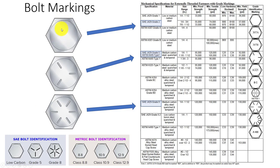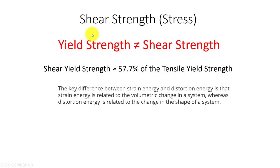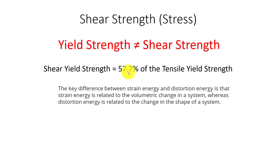If I'm making something designed to shear - say I have a gearbox on an auger and I don't want to hurt the gearbox - I could put a grade two bolt in there at a certain diameter and know it will shear, protecting the gearbox. Now let's talk about shear yield strength. Using the distortion energy theorem, which deals with change in shape of the system, the shear yield strength is going to be 57.7% of the tensile yield strength. So we multiply the yield strength by 0.577 to get our shear yield strength.